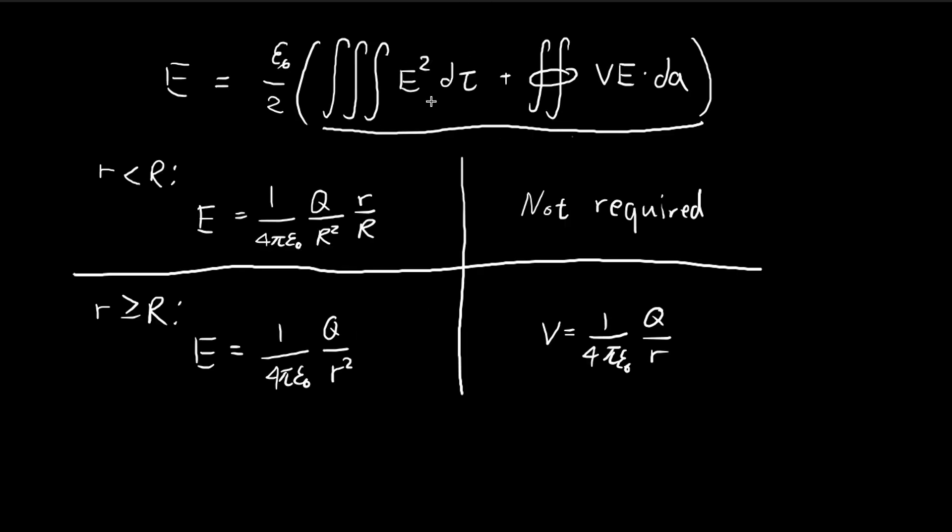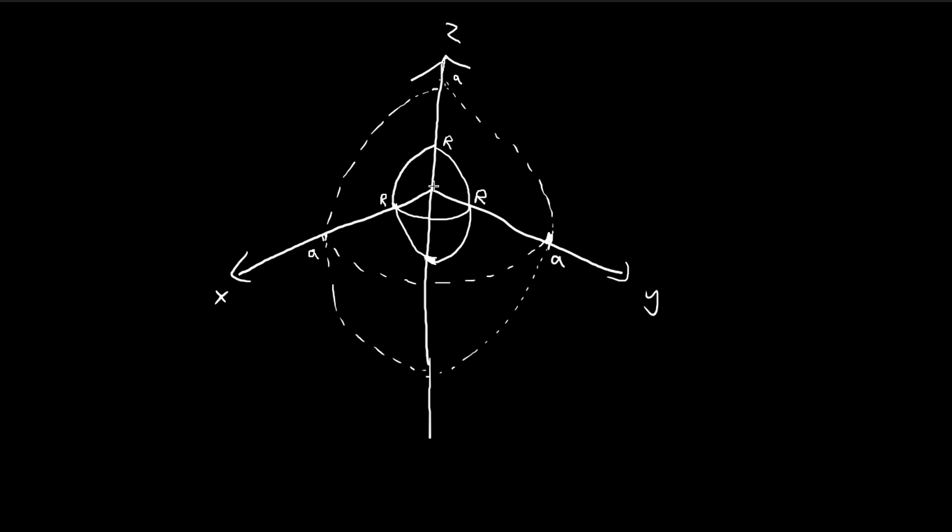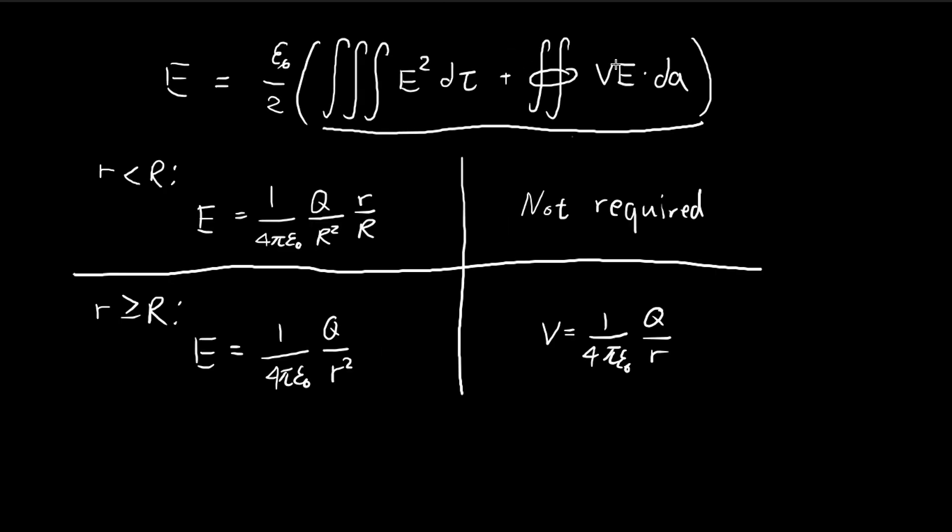So for the first component, this is a volume integral, we're going to integrate the electric field squared along the region enclosed by this spherical shell. So it goes from 0 to A, so the region inside of the spherical shell. And for this surface integral, we're going to integrate across the surface the potential multiplied by the electric field at the surface, multiplied by this small surface element. So just standard procedure for a surface integral.